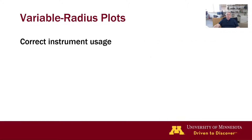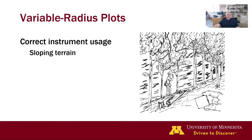Two additional important points regarding use of angle gauges and prisms for tally of variable radius plots: the assumption behind instrument usage is that the line of sight from the instrument to breast height on the tree is horizontal. In sloping terrain, instrument usage must be adjusted. With more costly angle gauge instruments like a Spiegel reliscope, the adjustment is automatic. An advantage of the prism is that an adjustment for sloping terrain can be made by tilting the prism to an angle equivalent to the angle of the terrain slope.